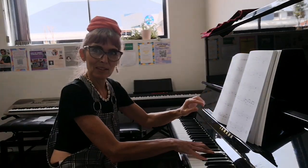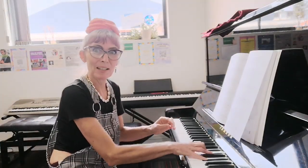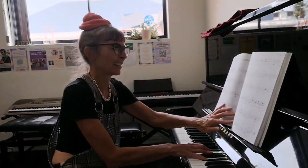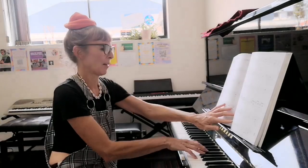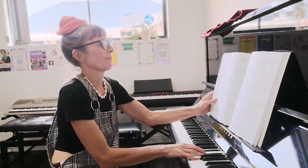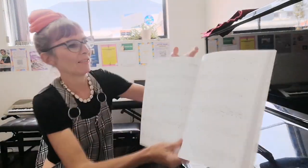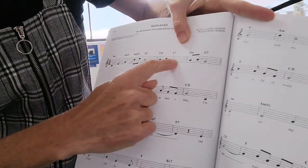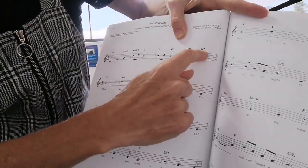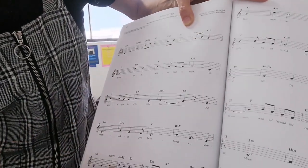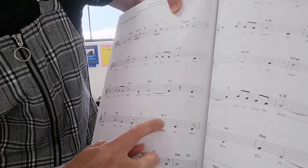Dominant 7 chords are much more common. If you look at this sheet you've got a B7, an A7, a G7, an E7, and a Bb7.